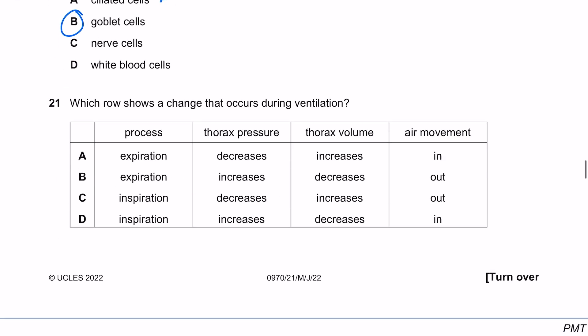Which row shows a change that occurs during ventilation? When we're taking a breath in during inspiration, because the volume increases the pressure decreases meaning the air moves in. When we expire, our volume inside our thorax decreases. Because we've got a smaller volume, the thorax pressure increases and air is moved out. The answer here is B.